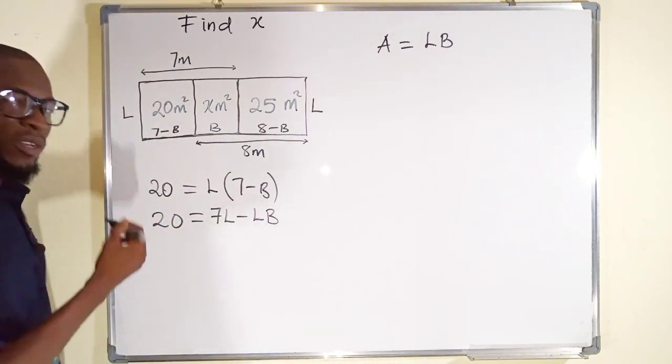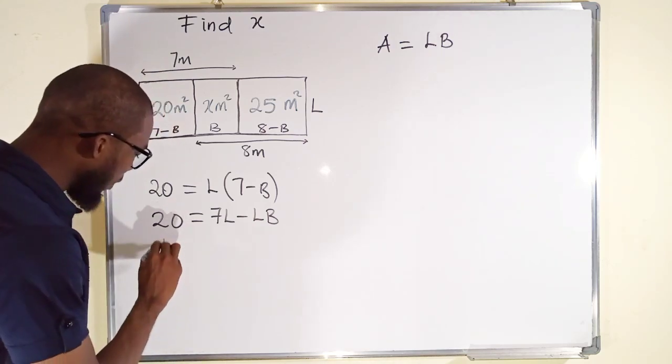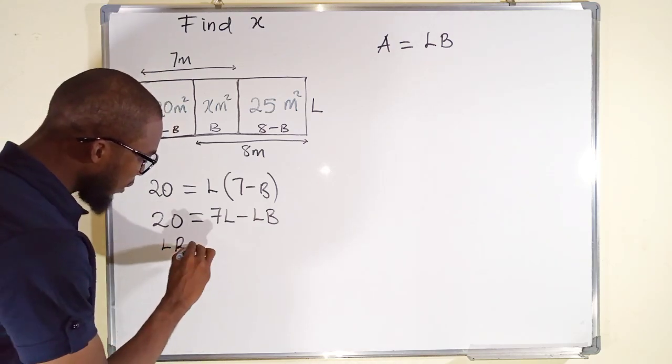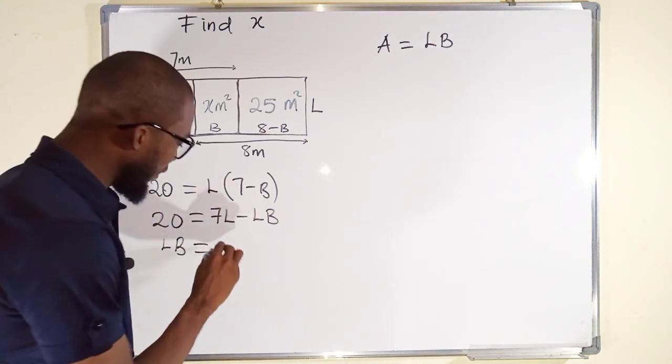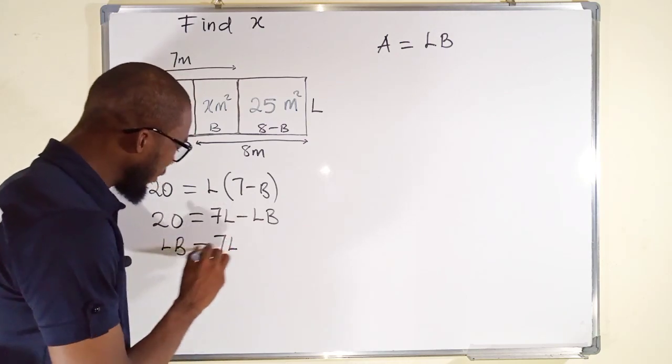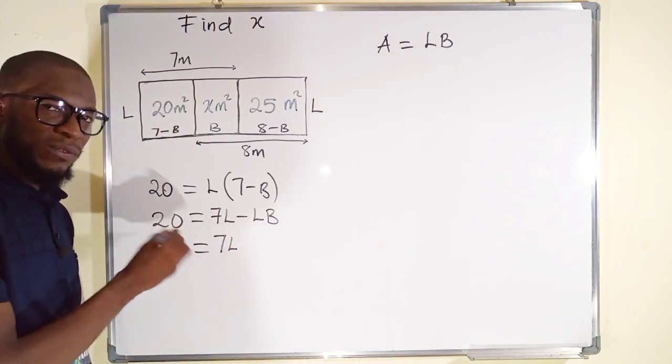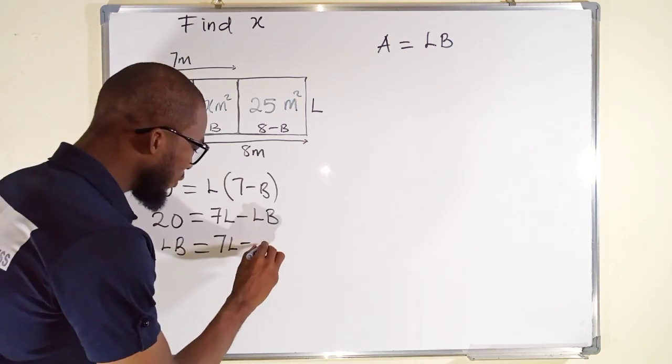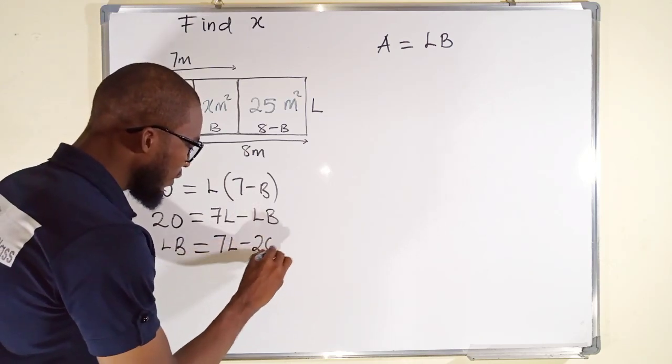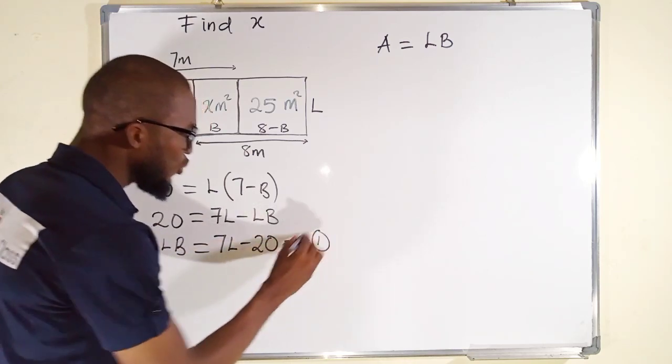This is negative. Coming to the left, it becomes positive. So, we have LB to the left. To the right, we already have 7L there. This is 20 positive to the left. Coming to the right, it becomes negative 20. I can name this one as equation 1.